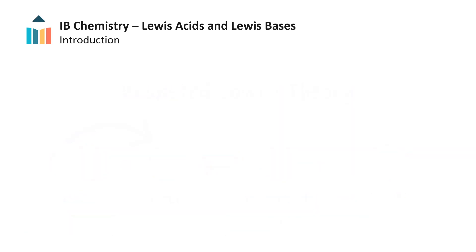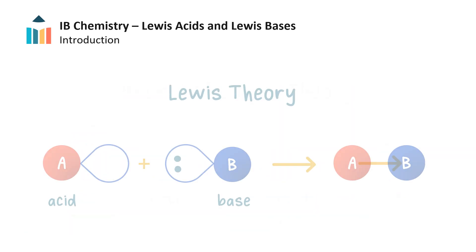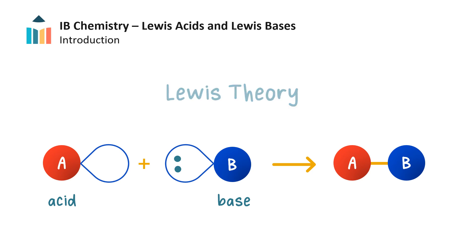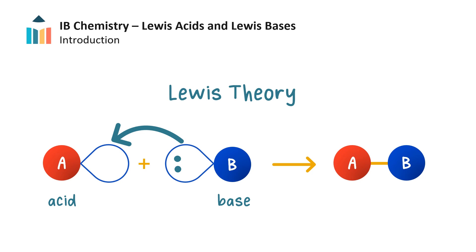Another way to understand acids and bases is by Lewis acid-base theory. In this definition, a pair of electrons are transferred. It is important to note that the term 'electron transfer' generally refers to redox reactions, but 'electron pair transfer' refers to bond formation in Lewis acid-base reactions.